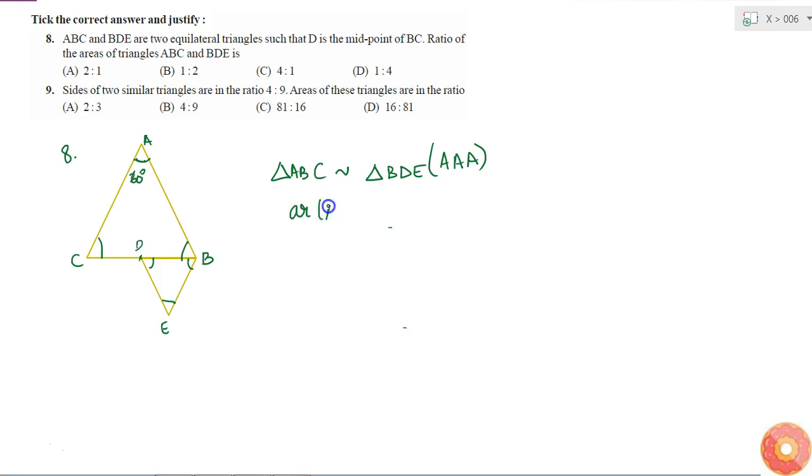So what will be the ratio of area of ABC to the area of BDE? That will be the square of ratio of the sides. So I can write it as BC squared to BD squared. Because here, since it is an equilateral triangle, I can take any side of this one and any side of this one. So it is equal to BC by BD square.